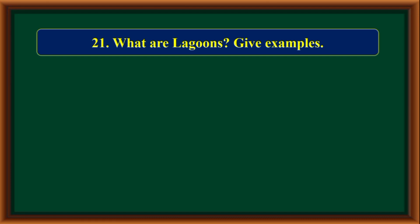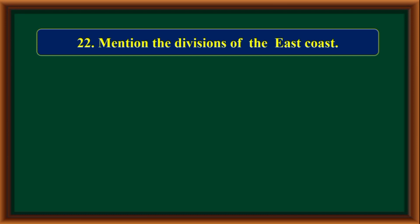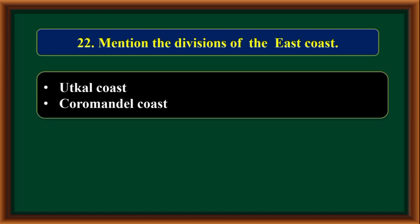What are lagoons? Give an example. On the east coast there are some salty, brackish water lakes called lagoons. Chilka Lake of Odisha and Pulicat Lake of Tamil Nadu are the important examples. The divisions of the east coast are: Utkal coast and Coromandel coast.